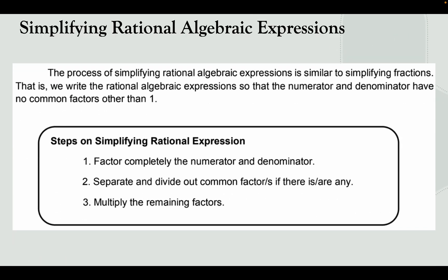The process of simplifying rational algebraic expressions is similar to simplifying fractions. We write the rational algebraic expression so that the numerator and denominator have no common factors other than 1. The steps are: first, factor completely the numerator and denominator; second, separate and divide out common factors if there are any; and third, multiply the remaining factors.